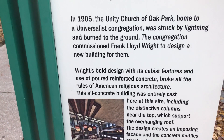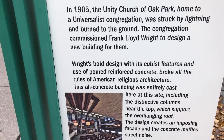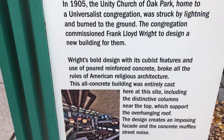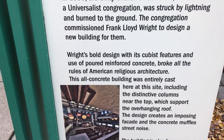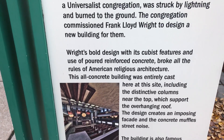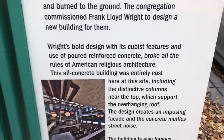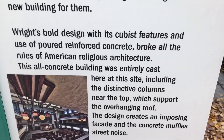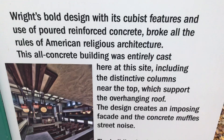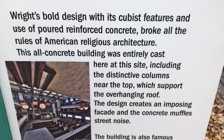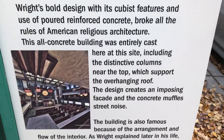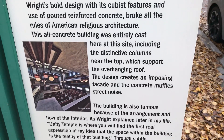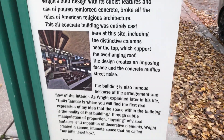Wright's bold design with its cubist features and use of poured reinforced concrete broke all the rules of American religious architecture. This all-concrete building was entirely cast here at the site, including the distinctive columns near the top to support the overhanging roof. The design creates an imposing facade and the concrete muffles street noise.